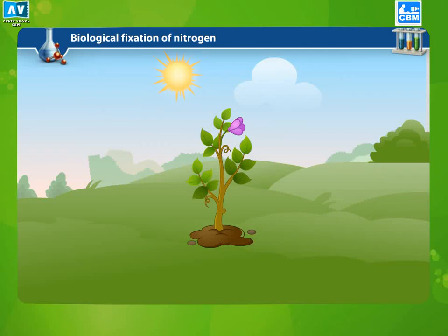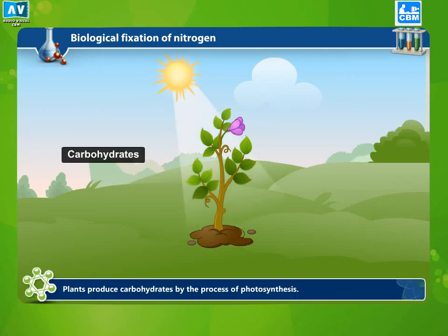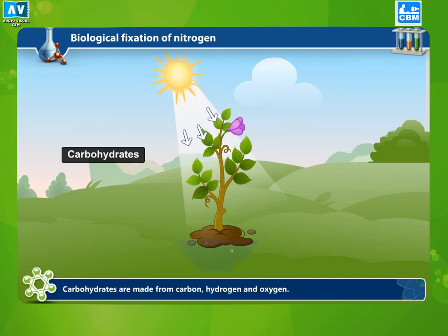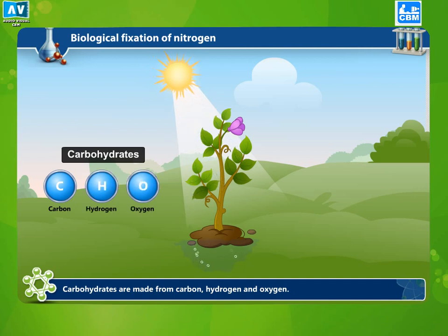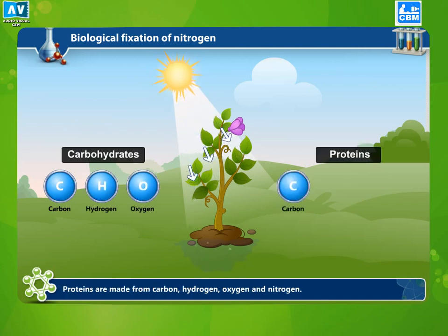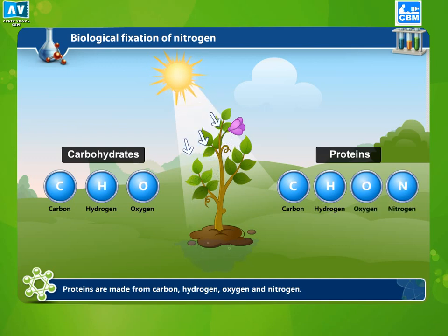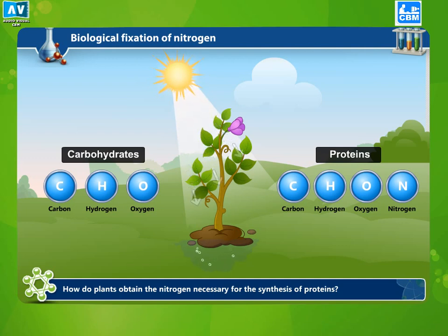Biological fixation of nitrogen. Plants produce carbohydrates by the process of photosynthesis. Carbohydrates are made from carbon, hydrogen and oxygen. Proteins are made from carbon, hydrogen, oxygen and nitrogen. How do plants obtain the nitrogen necessary for the synthesis of proteins?